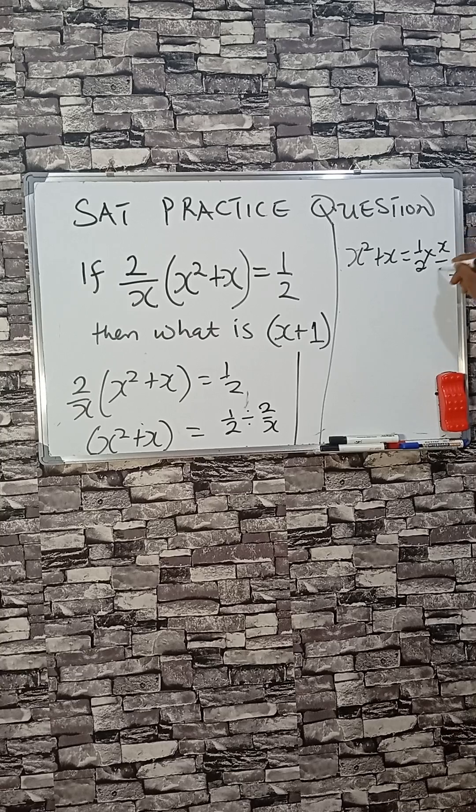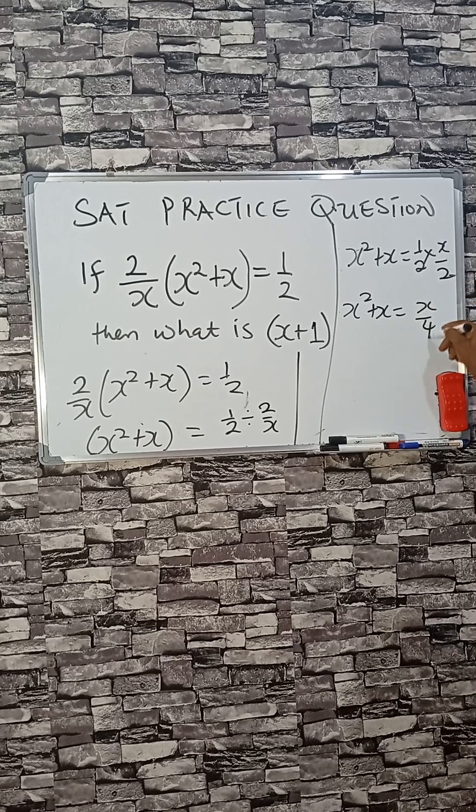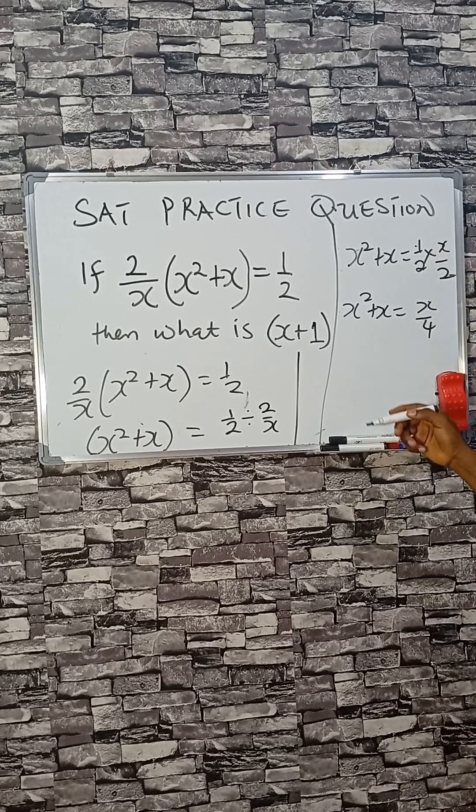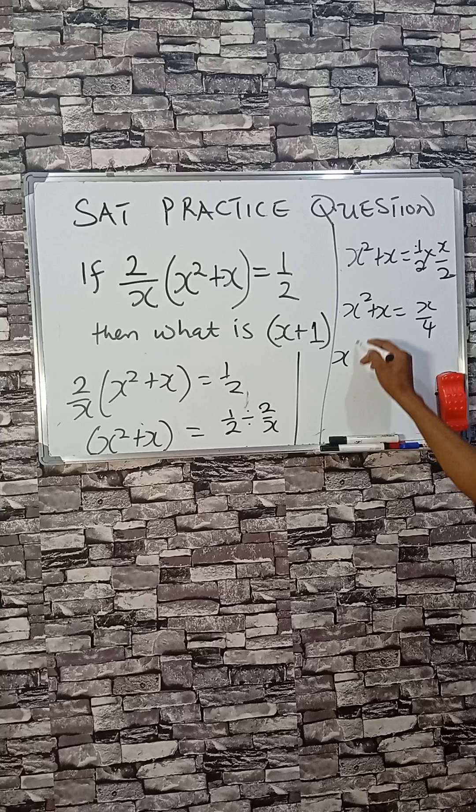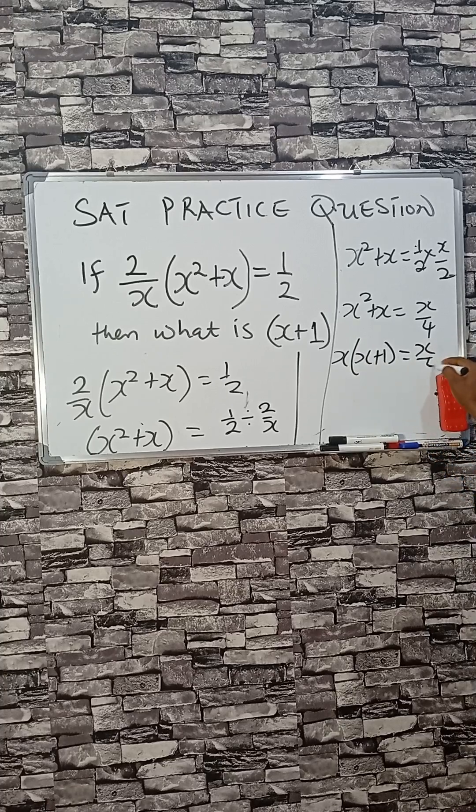Times x over two. And then that will give us x squared plus x equals to x divided by four. This time, we can factor out x here to have x plus one.